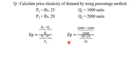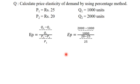Where EP stands for price elasticity of demand. Q1 stands for quantity demanded before change in price. Q2 stands for quantity demanded after change in price. P1 stands for price before price change. P2 stands for price after price change. Then we have to fit the given data in the equation.